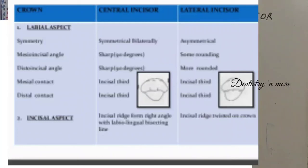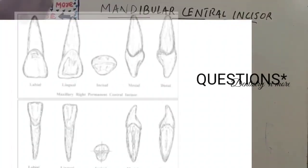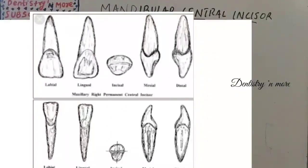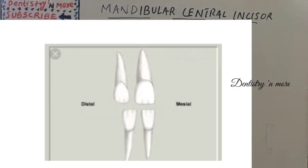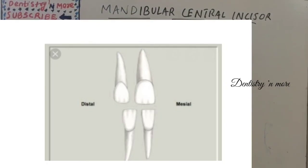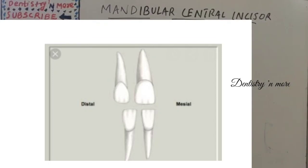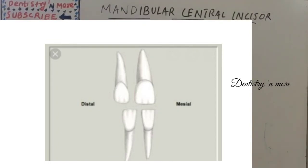That covers the mandibular central incisor. Key exam topics include the differences between the maxillary central and mandibular central incisor, and between the mandibular central and mandibular lateral incisor. It is the smallest tooth in the oral cavity with very few features on the labial, lingual, mesial, and incisal sides. The mandibular lateral incisor will be covered in the next session.